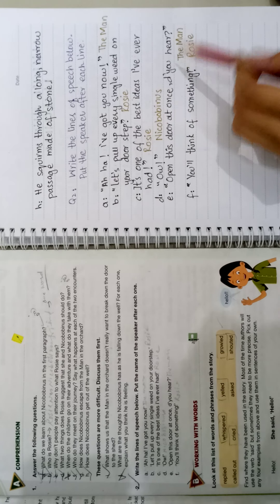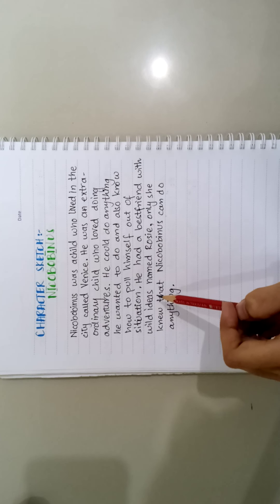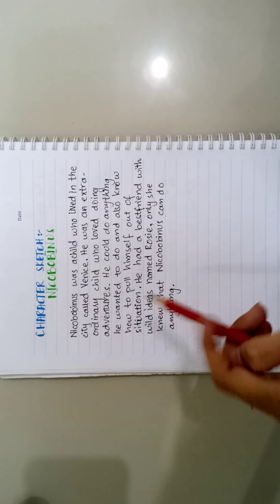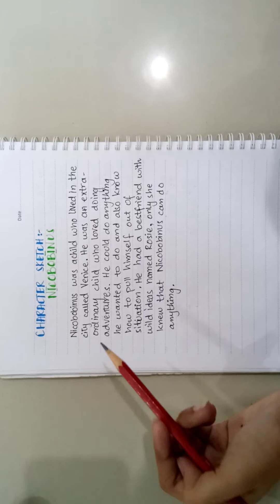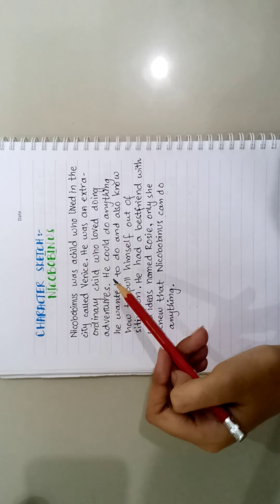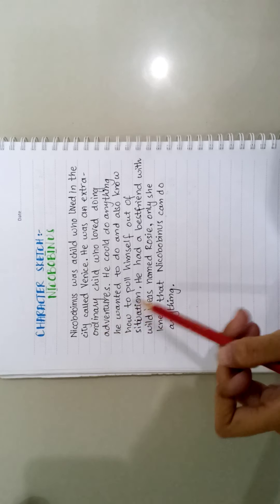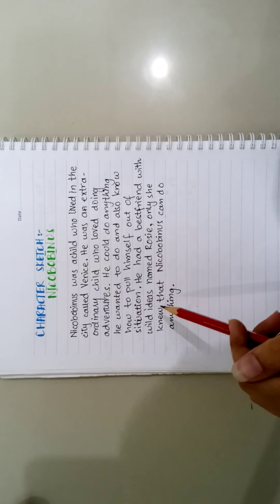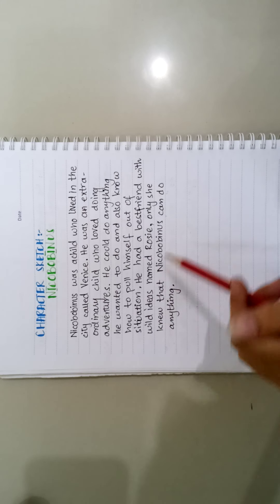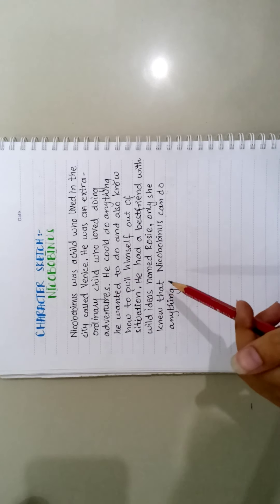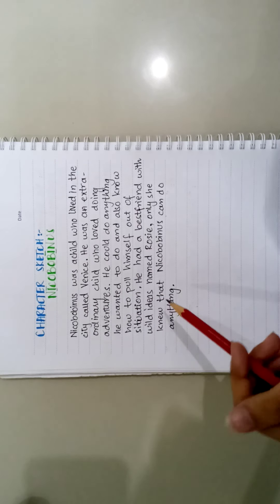Now let's look at the character sketch which is Nicobobinus in this chapter. Nicobobinus was a child who lived in the city called Venus. He was an extraordinary child who loved doing adventures. He could do anything he wanted to do and also know how to pull himself out of a situation. He had a best friend with wild ideas named Rosie. Only she knew that Nicobobinus can do anything.